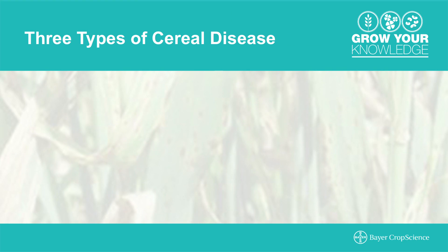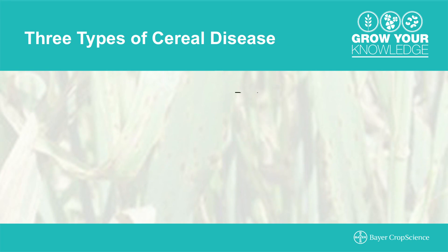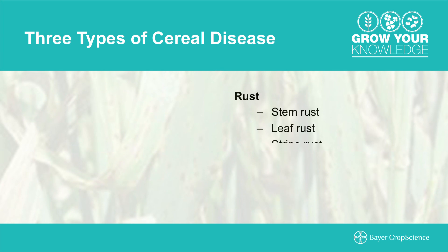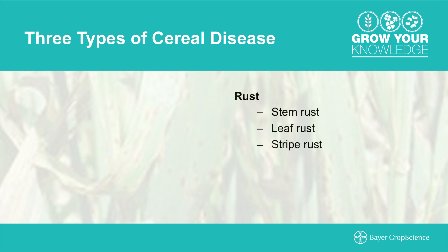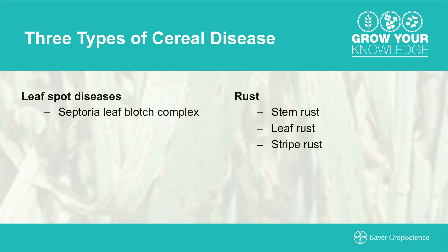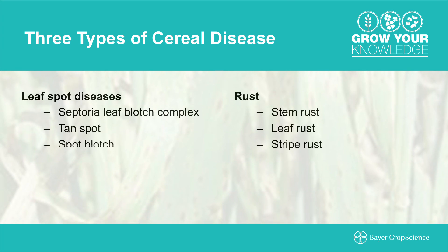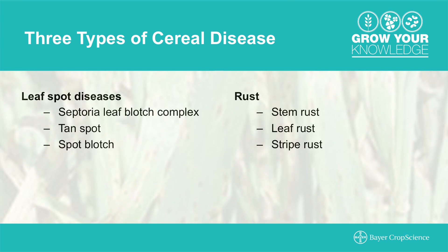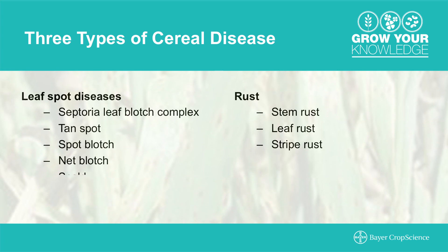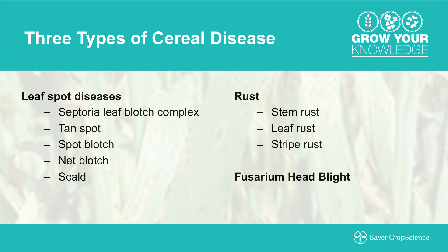There are many different types of cereal diseases that come into play. For the most part, they can be broken down into three main categories: rusts — that being stem, leaf, and stripe rust — your leaf spotting diseases: Septoria leaf blotch complex, tan spot, spot blotch, net blotch, and scald, along with fusarium head blight.